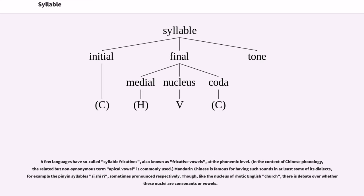A few languages have so-called syllabic fricatives, also known as fricative vowels, at the phonemic level. Mandarin Chinese is famous for having such sounds in at least some of its dialects, for example the pinyin syllables si, shi, ri, sometimes pronounced respectively. Though, like the nucleus of rhotic English church, there is debate over whether these nuclei are consonants or vowels.